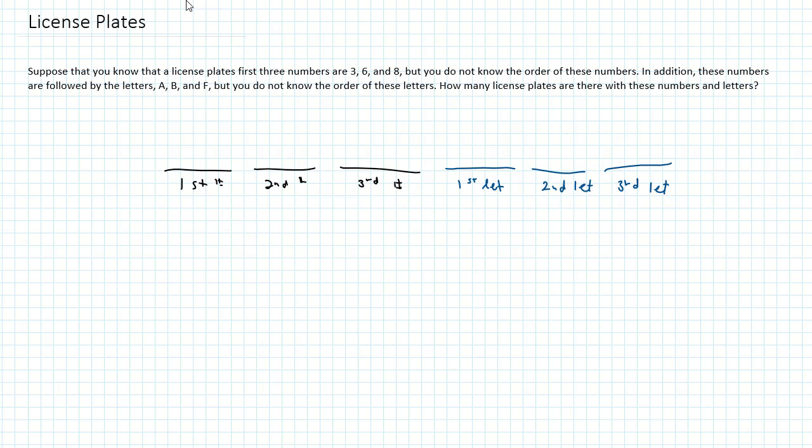All right, so let's think about that first number. It's got to be chosen from 3, 6, or 8, so there are three possibilities for that. Now once I've chosen the first number, the second number has to come from the remaining two. So there's two possibilities. Once I've chosen the first number and the second number, then I automatically know there's only one possibility left for the third number.